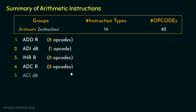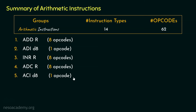Coming to the next instruction, ACID8. It performs the same operation as ADCR. The only difference is that this time the addend is sent via the instruction itself, so it falls under immediate addressing mode — add with carry, immediate, to the content of the accumulator. For this type, there is a single opcode.